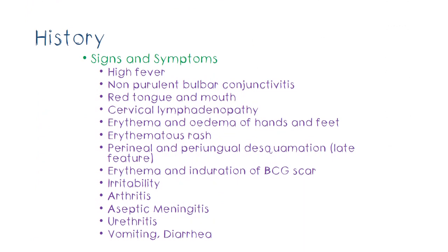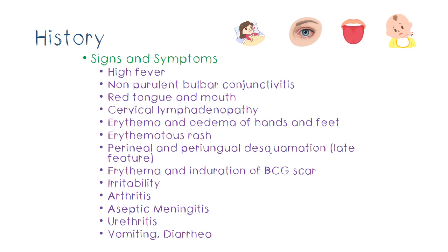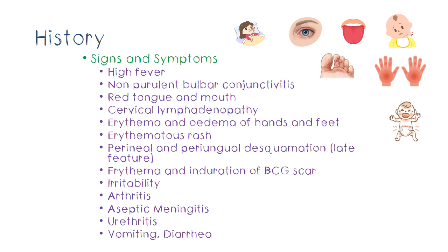Kawasaki disease is actually a set of vague symptoms that we might see in any other condition. You usually get a high fever lasting for more than five days. Also, you get a non-purulent conjunctivitis, meaning that the conjunctivae are red but there is no pus in the eye. You can get a red tongue and mouth known as strawberry tongue, and also cervical lymphadenopathy. You can also see red palms and soles and an erythematous rash that is non-vesicular.